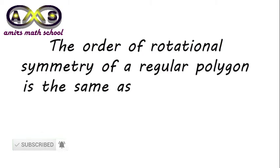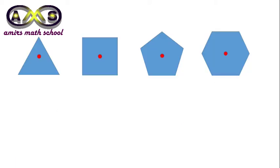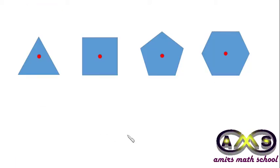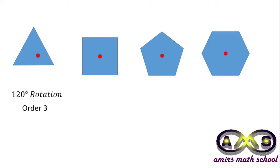Let us start with the regular polygon with 3 sides, that is an equilateral triangle. After 120 degree rotation, it became identical with the initial position, or it occupies the initial position. So, it has rotational symmetry of order 3.